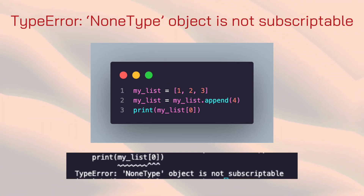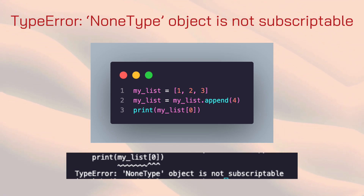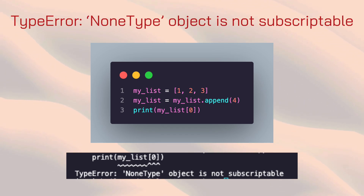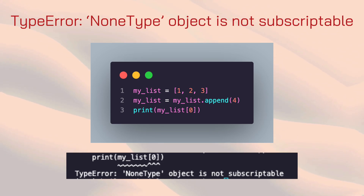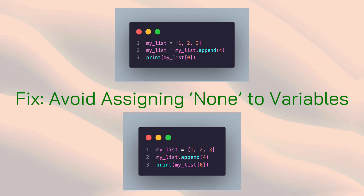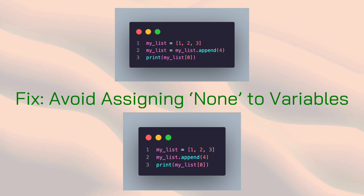This one's strange: TypeError — NoneType object is not subscriptable. This usually happens when you try to index or slice a variable that's actually None. It's common if you accidentally overwrite a list or string with None. Here, I used append on my list, which doesn't return a new list but modifies the original, meaning my list now equals None. To fix this, just remove the assignment so append doesn't replace the variable.